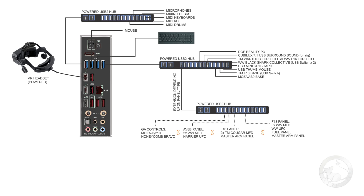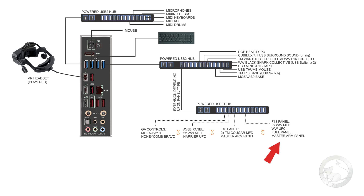Including most of my HOTAS peripherals along with a 7.1 surround sound system with speakers that is mounted onto my motion rig. I also have an extension to that USB 2 hub that hot plugs based upon which panel I have connected at the time. Either a general aviation bracket that homes a Moser AY210 and a Honeycomb Bravo, or an AV8B panel with two Wing Wing MFDs and a homemade Harrier UFC. Another option is an F16 panel that boasts two Thrustmaster Cougar MFDs, a Wing Wing IFC, and a Master Arm panel. And I also have an F18 option that boasts three Wing Wing DDIs, a Wing Wing UFC, a Fuel Panel, and a Master Arm Panel.